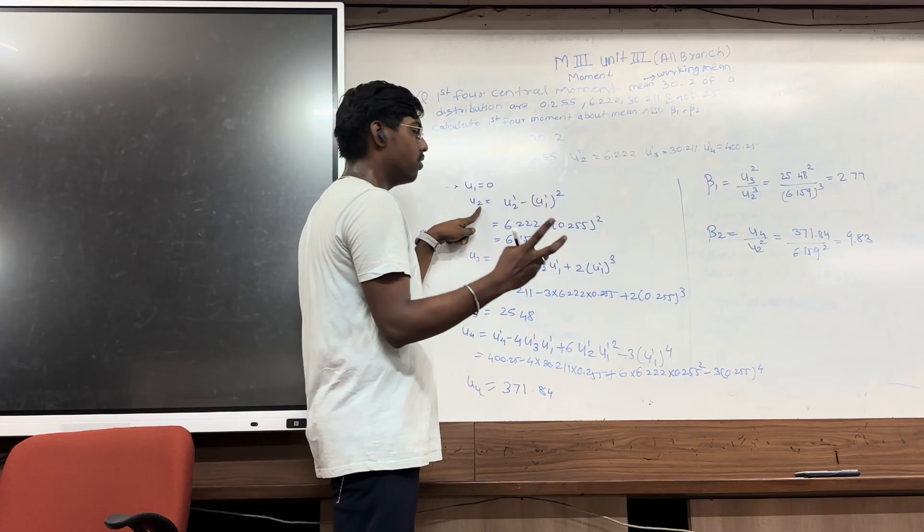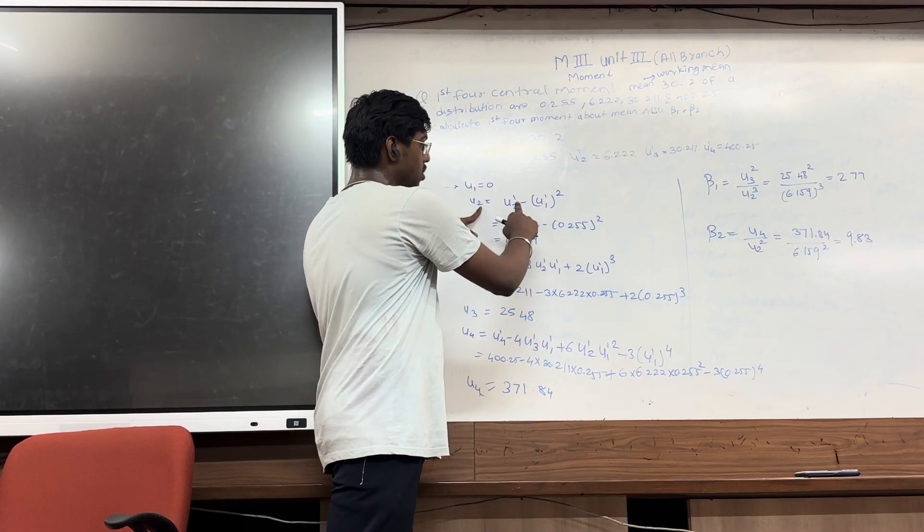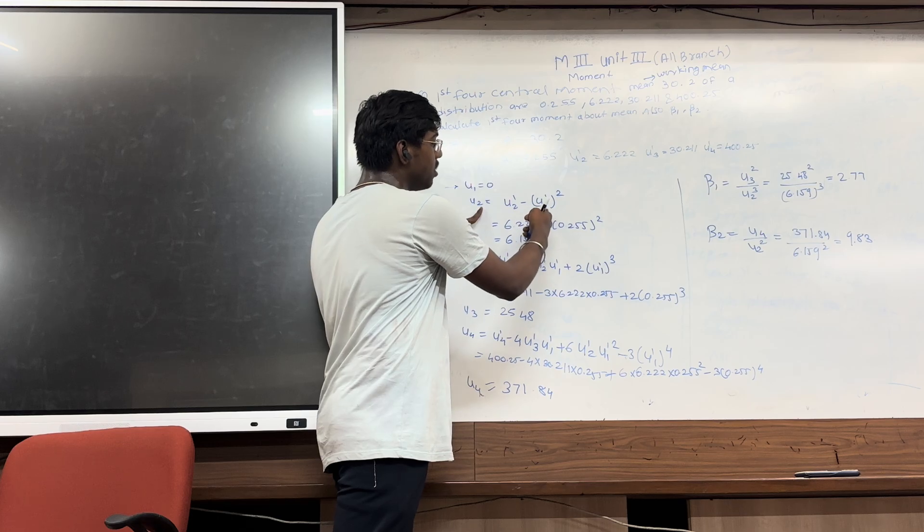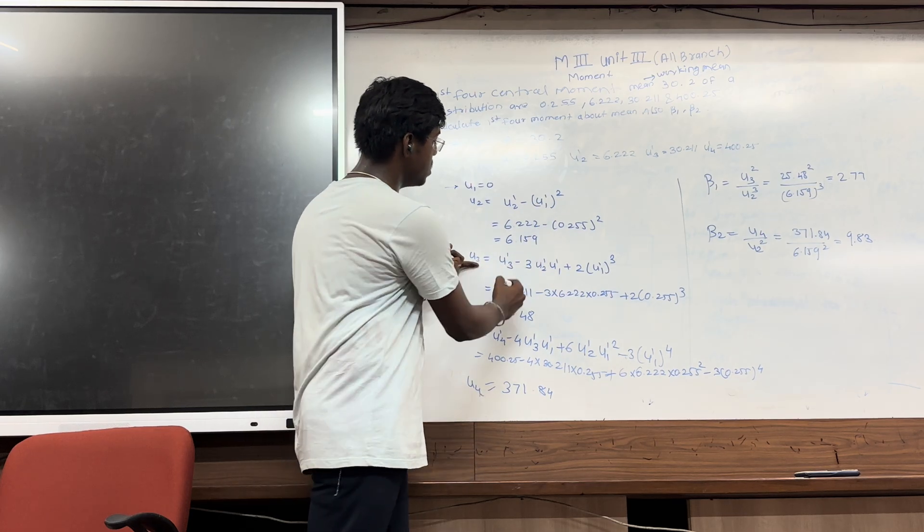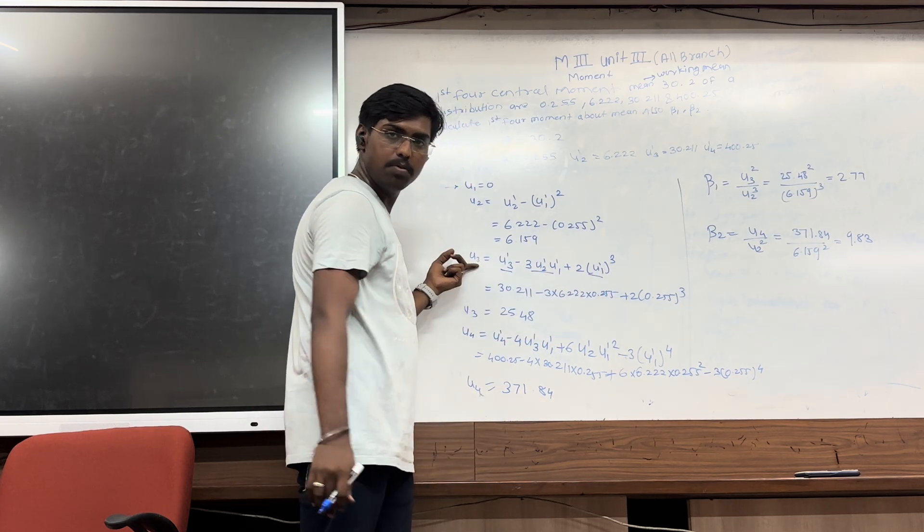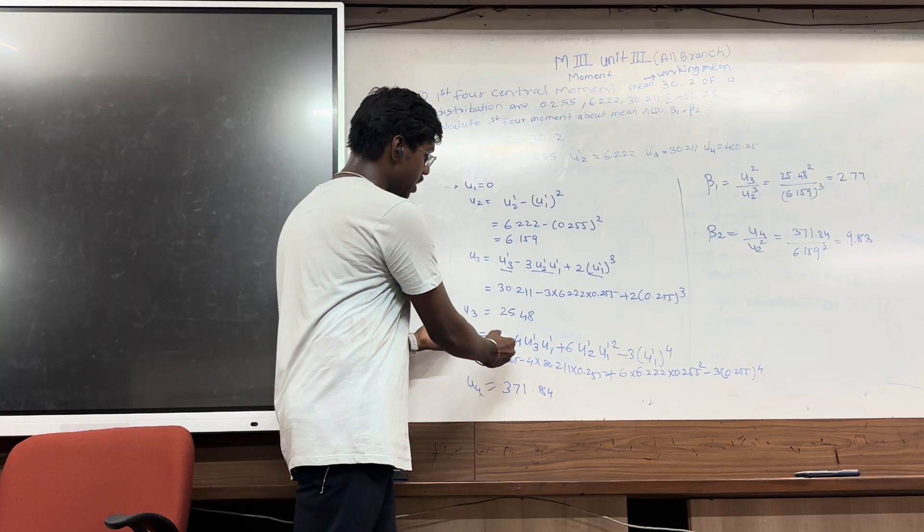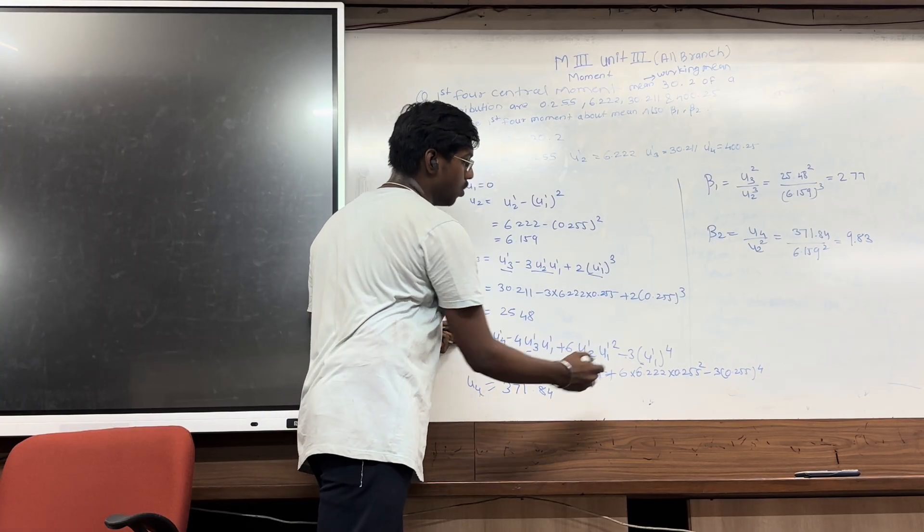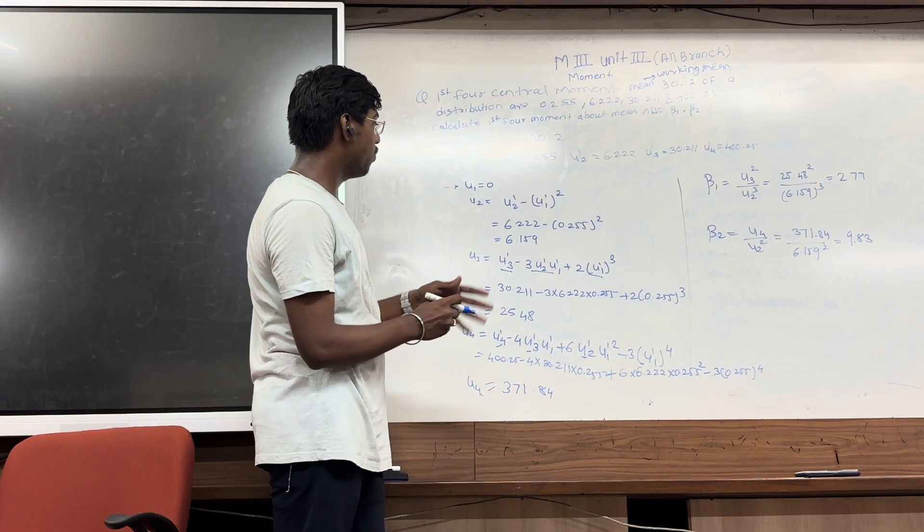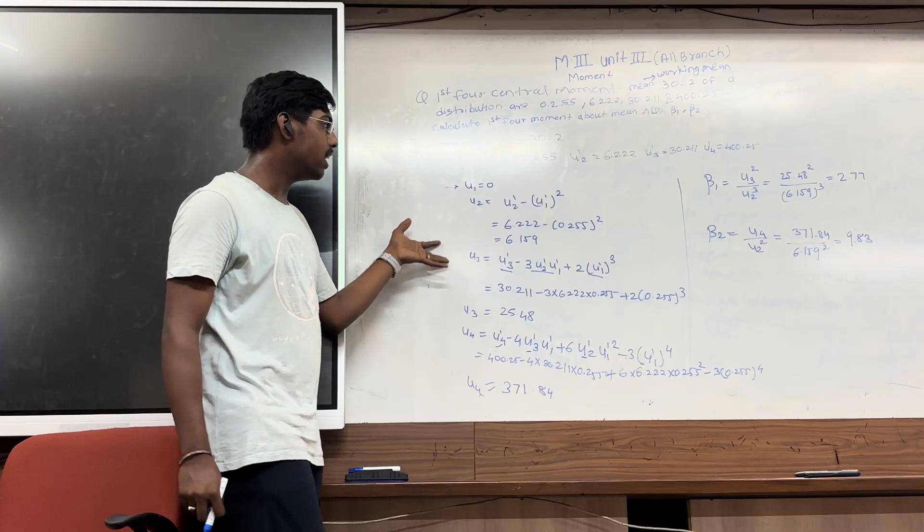So 2 variables must be there, 1 and 2. After that mu1 dash. In the 3, it is 1, 2, 3, so it will be 3 variables. For the 4, it is 1, 2, 3, 4. Remember this formula and we calculate it.